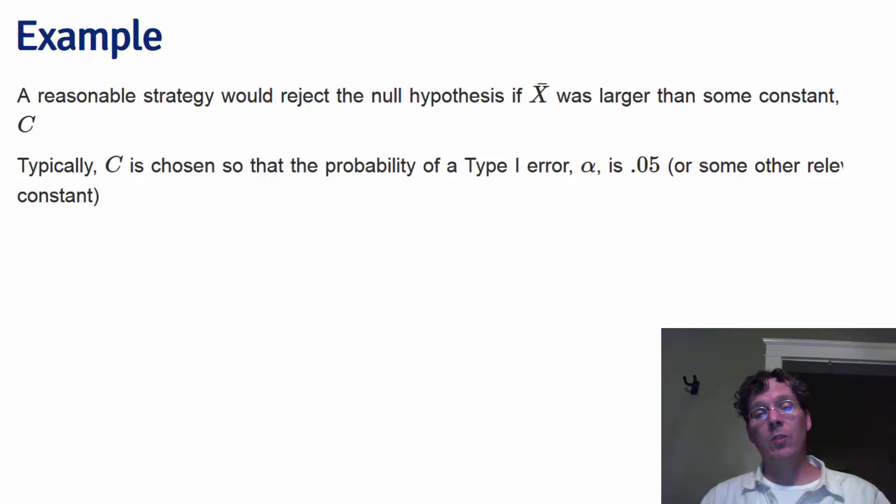Typically, c is chosen so that the probability of type 1 error rate, this probability we label alpha, is a low number. 5% has emerged as sort of a benchmark in hypothesis testing.